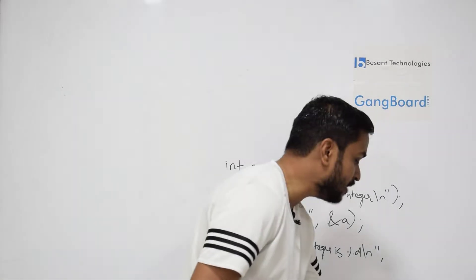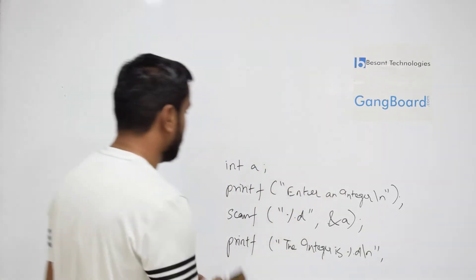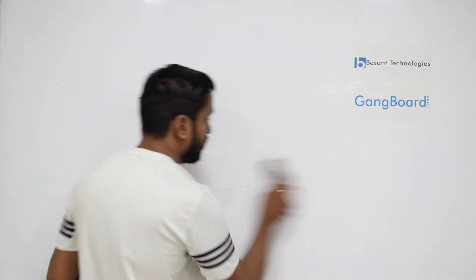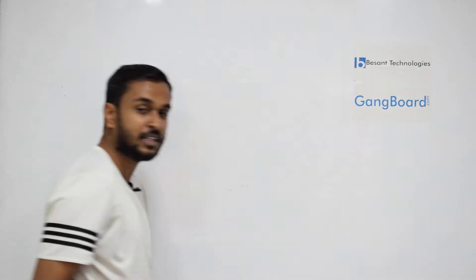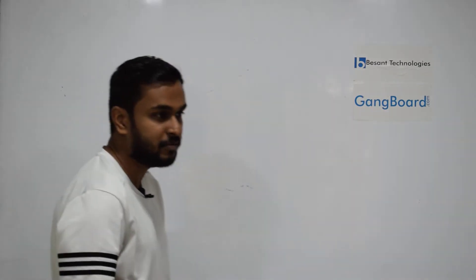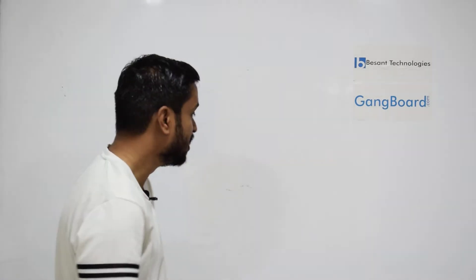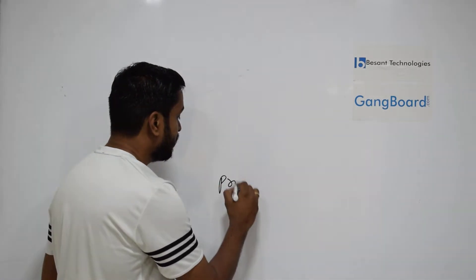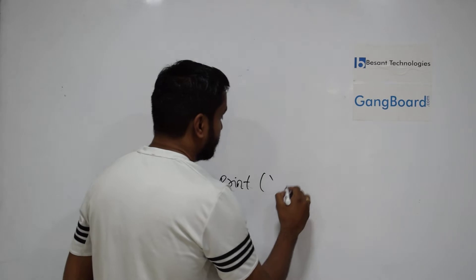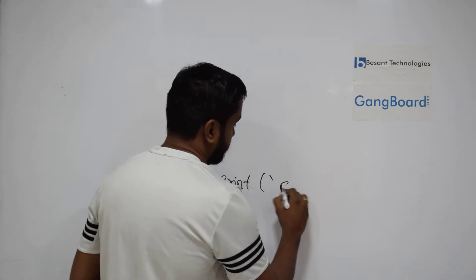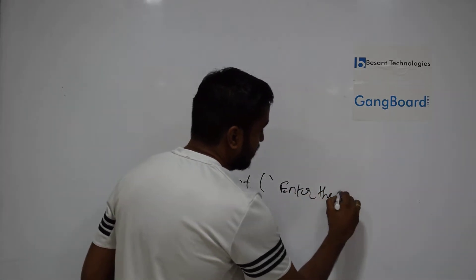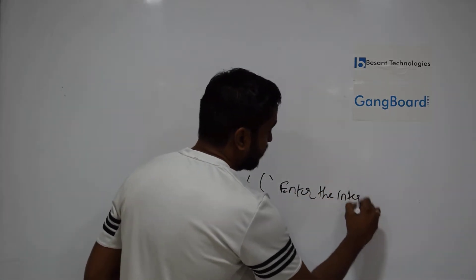This is how we do it in Python. So in Python, if you look at this — there is no variable declaration, no data type declaration. We can directly write print, then enter the integer. That's how we can do it.